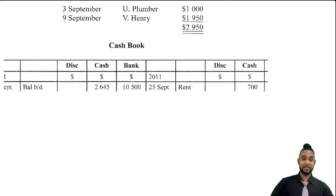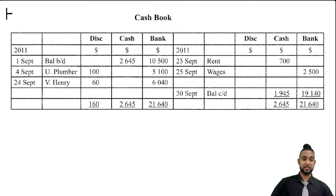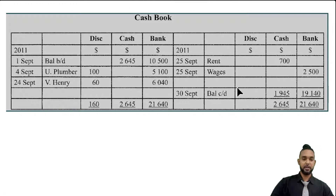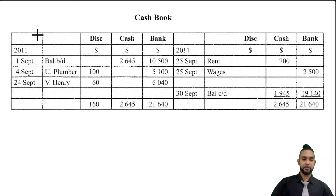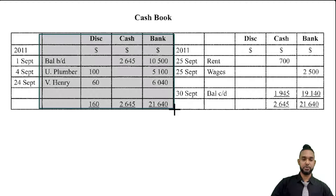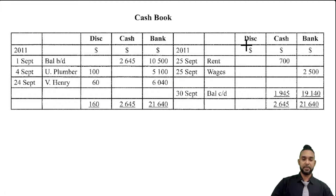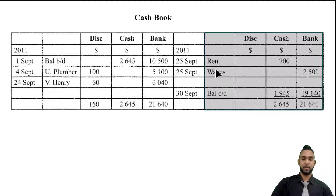The last item is the cash book. The debit side shows receipts — money coming in — as well as the discount allowed column. The credit side shows payments — money going out — and the discount received column.